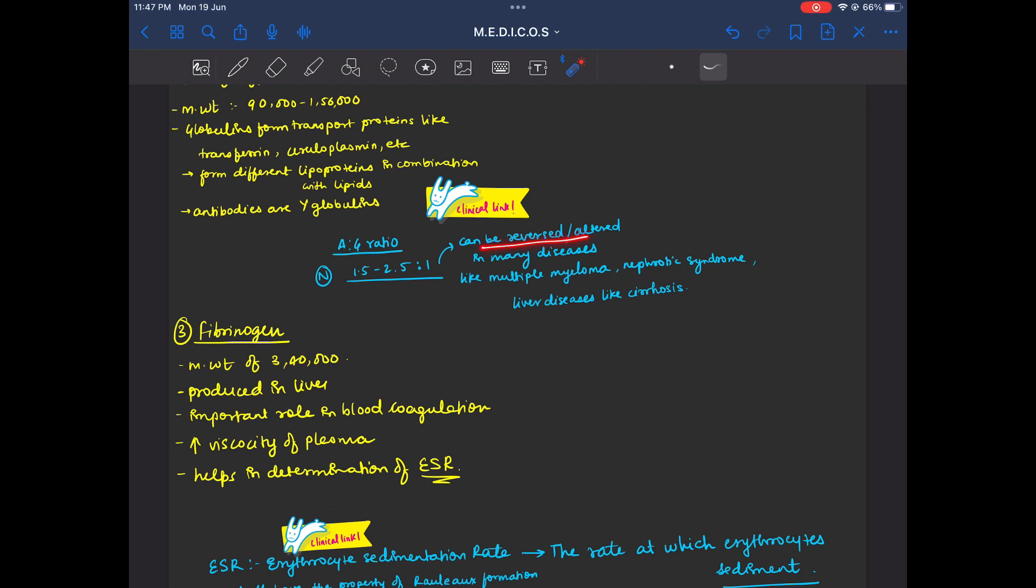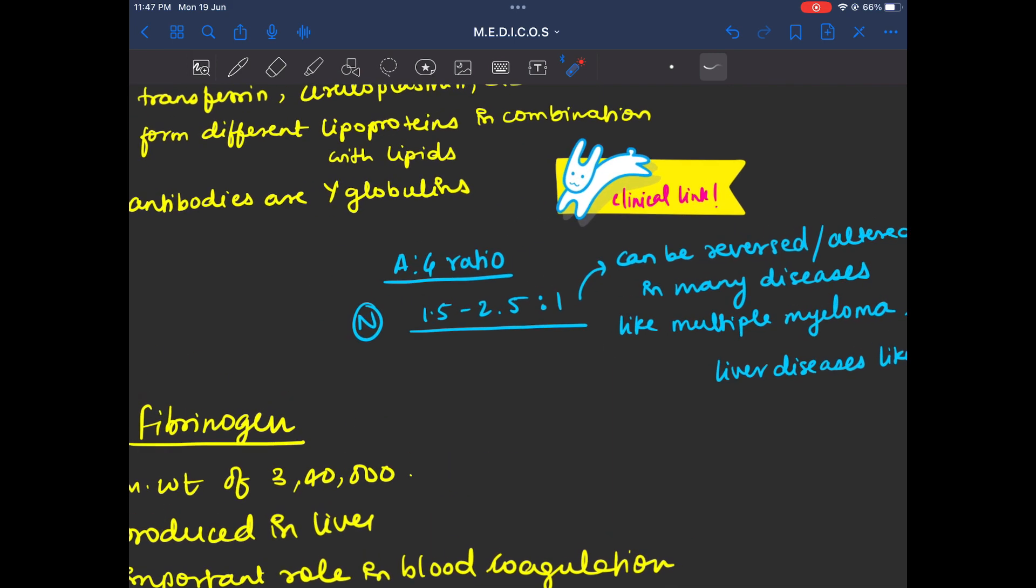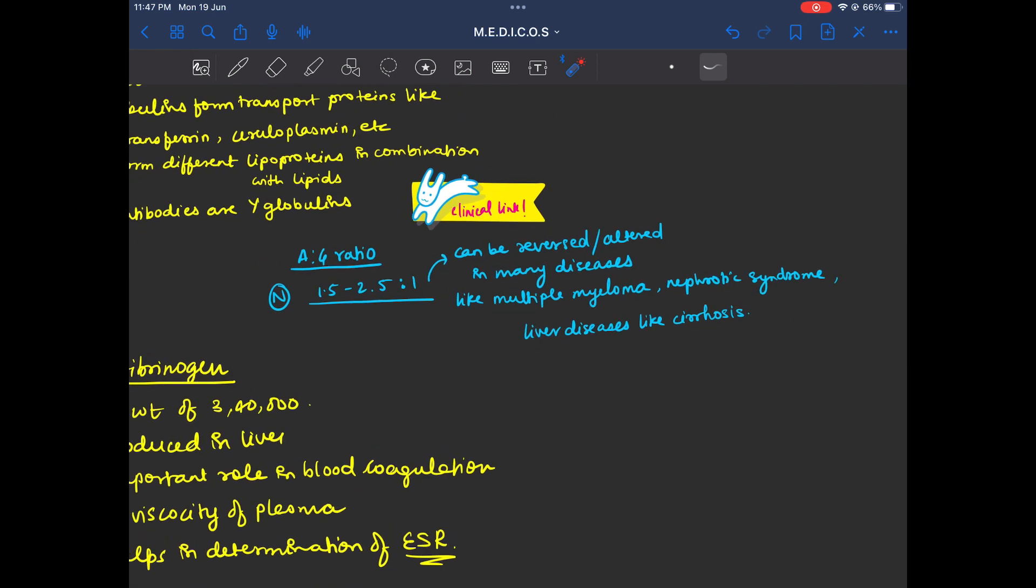This can be reversed or altered in many diseases. Like we talked about nephrotic syndrome. In nephrotic syndrome there was more albuminuria and loss in urine. So, the A/G ratio will decrease because the albumin will decrease. In liver diseases like cirrhosis in which the albumin has become less, the A/G ratio can also be altered.